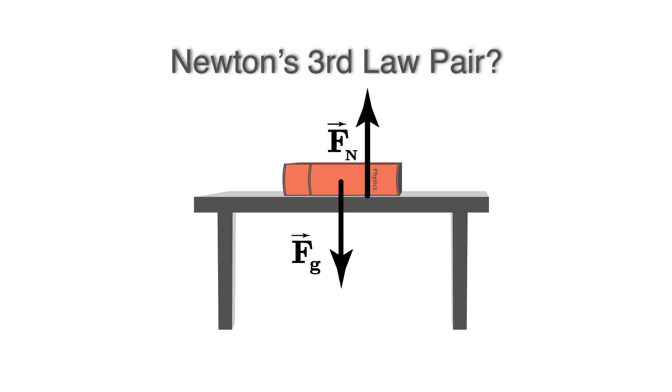Let's look at an example of a book sitting on a table. It's being pulled down by the gravitational force, and it's being held up by the normal force. Are these two forces a Newton's Third Law pair? The book is not accelerating, so these forces are equal in magnitude and opposite in direction. But they cannot be a Newton's Third Law pair for two different reasons.